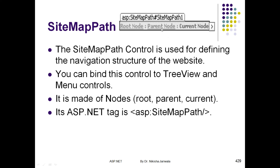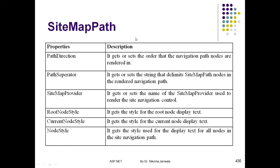Another property is path separator. If you look here, the path separator is the colon sign between root node and parent node. Instead of this colon, if we put a greater-than sign, we can specify the path separator. Another property is SiteMap provider — in SiteMap provider we will specify the name of the provider from which we will get all the values for this control.